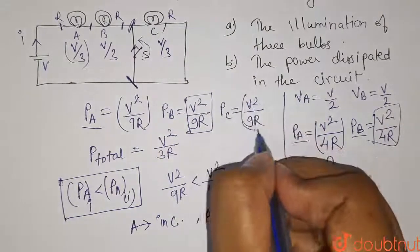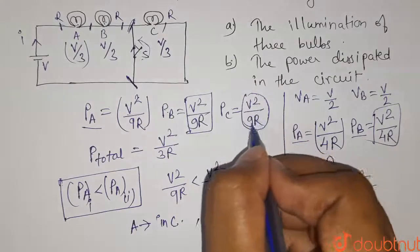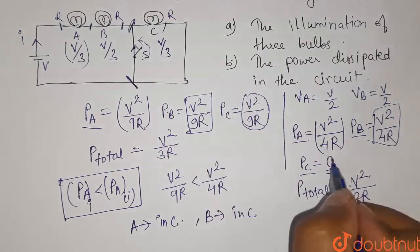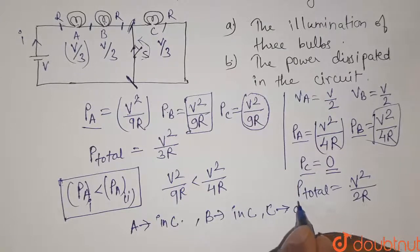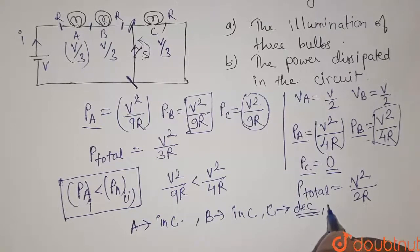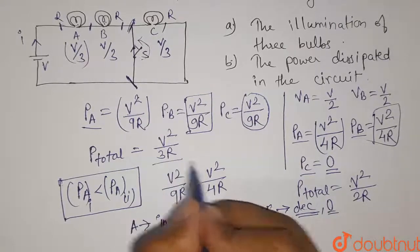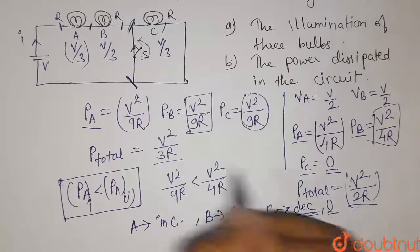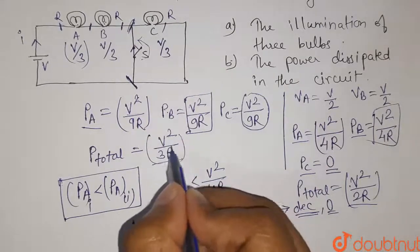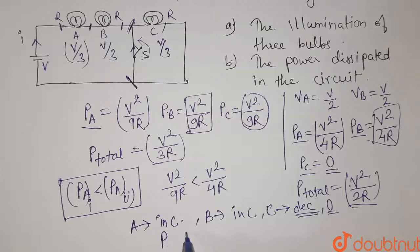For bulb C, the power consumed in the first case is V²/9R, but in the second case it is zero, so bulb C will not glow — its illumination becomes zero. The total power also increases because V²/2R is greater than V²/3R, so the power dissipated in the circuit also increases.